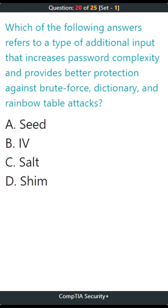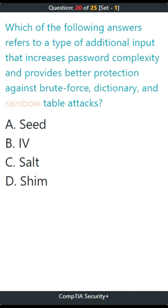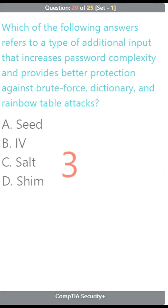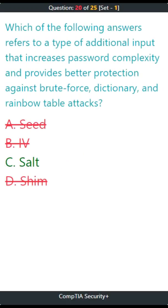Question 20. Which of the following answers refers to a type of additional input that increases password complexity and provides better protection against brute force, dictionary, and rainbow table attacks? A. Seed, B. IV, C. Salt, D. Shim. The correct answer is C. Salt.